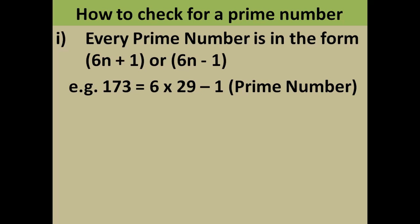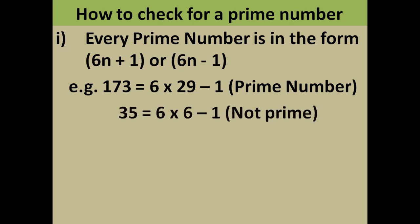However, this rule has a problem. By this rule you cannot be very sure — if a number is following this rule then it may be a prime number, but if a number is not following this rule then you are very sure that it is not a prime number. For example, 35 also follows this rule (6 into 6 minus 1), however 35 is not a prime number.